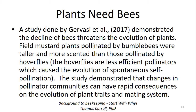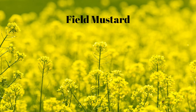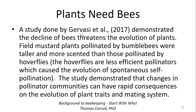A study by Gervais et al. (2017) demonstrated that the decline of bees threatens the evolution of plants. In the experiment, field mustard plants pollinated by bumblebees ended up being taller and more scented than those pollinated by hoverflies, which are less efficient pollinators. When fewer bees were available, plants switched to self-pollination, which eliminates the exchange of genetic material between plants — threatening their evolution. We need bees to have healthy, evolving plants.